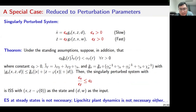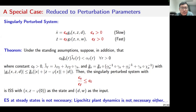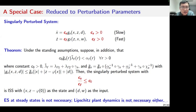A special case is that the perturbation functions are reduced to perturbation parameters. In this case, this is actually the normal singularly perturbed system, but based on our analysis we can give an alternative result. Under the aforementioned assumptions, suppose in addition that a certain inequality is satisfied. Then the singularly perturbed system can be rendered input-to-state stable by appropriately choosing the perturbation parameters.